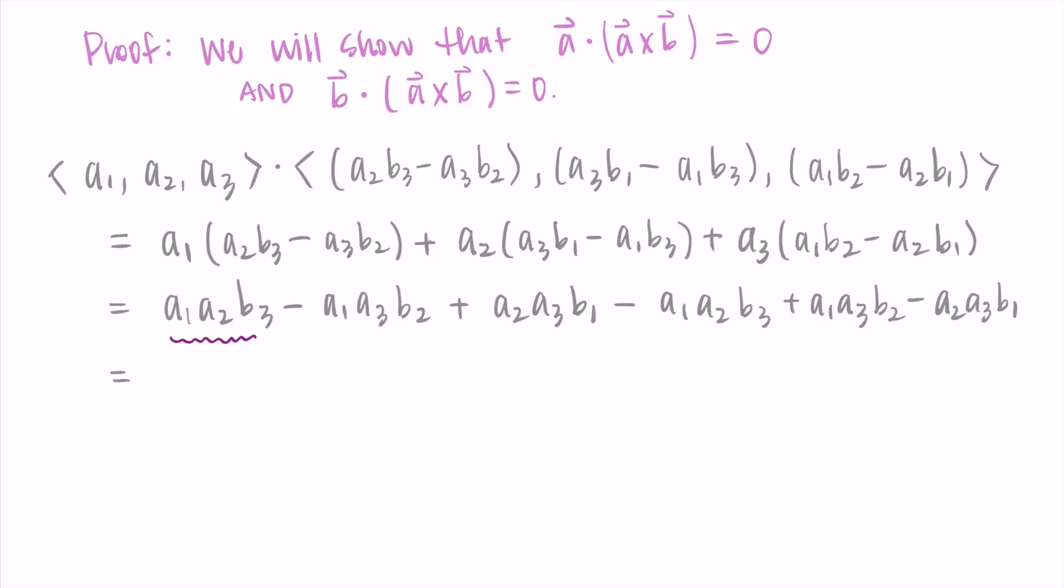You'll see here that these terms are going to start canceling out. So I have an A₁A₂B₃ both being added and subtracted. I have an A₁A₃B₂ being both added and subtracted. And I have an A₂A₃B₁ being both added and subtracted. So these all cancel out and I'm getting zero. I have zero for my dot product, and that tells me that these vectors are orthogonal.